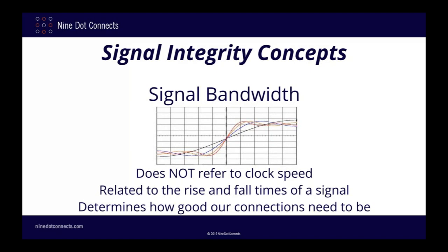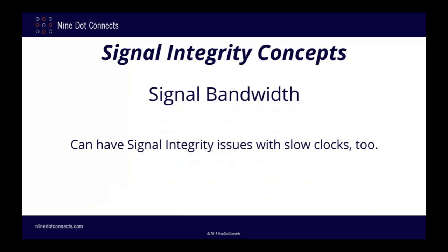It is only when the signal is changing that we get signal integrity issues. As an interesting side note, this means that you can have just as many signal integrity problems with a 100 MHz clock as you can with a 1 GHz clock. This is because a slow clock that has fast transitions can be just as dangerous as a fast clock that has fast transitions.